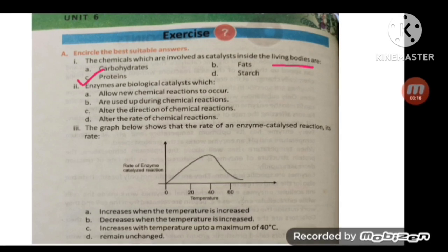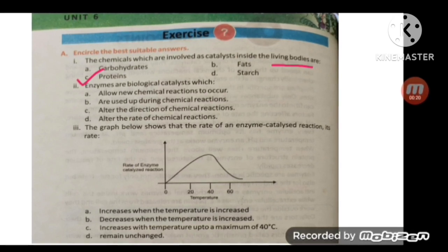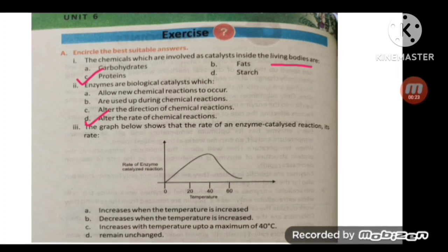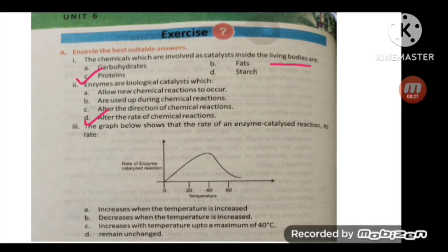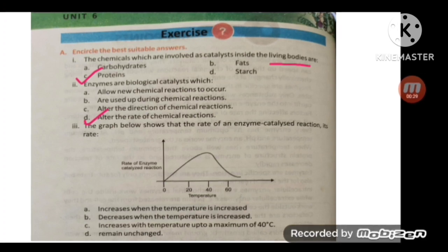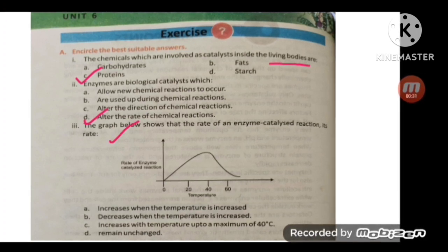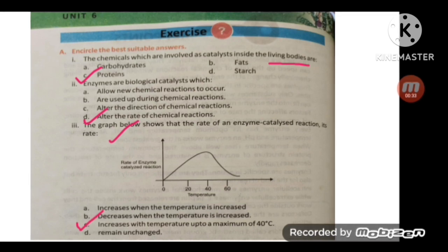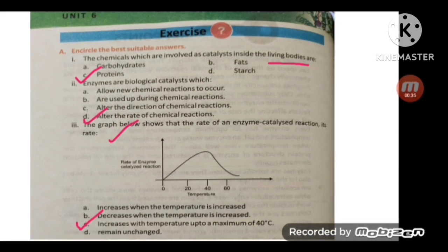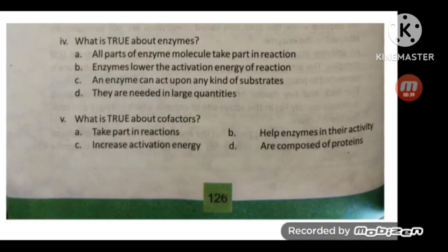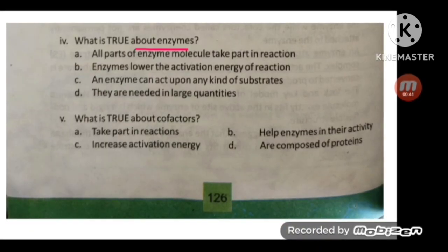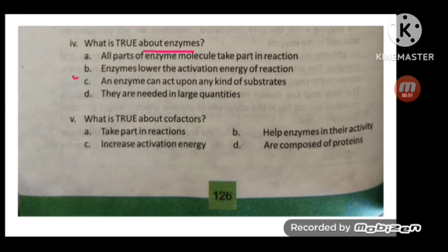Enzymes are biological catalysts which alter the rate of chemical reactions. MCQ number three: the graph below shows that the rate of an enzyme-catalyzed reaction increases with temperature up to a maximum of 40 degrees. Which is true about enzymes? The correct option is B: enzymes lower the activation energy of reaction.